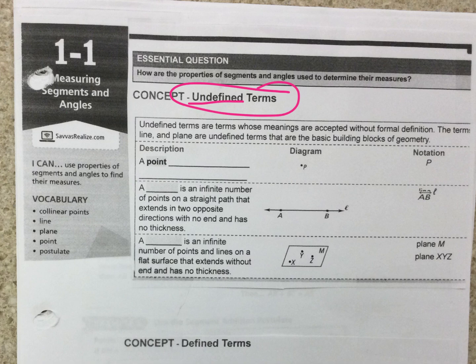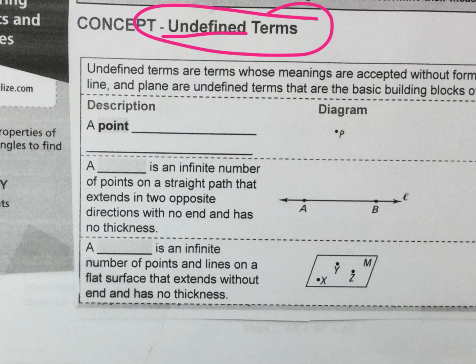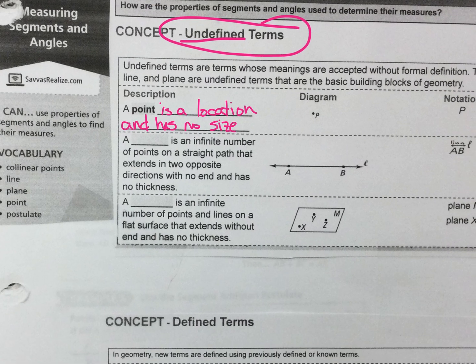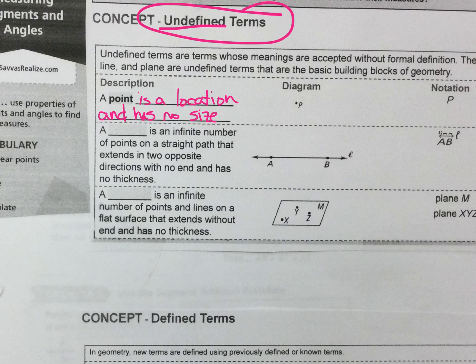They're undefined terms because there really isn't a way to write a definition of them except in normal language. So we use these undefined terms to define all the other terms in geometry. So a point is a location and has no size.